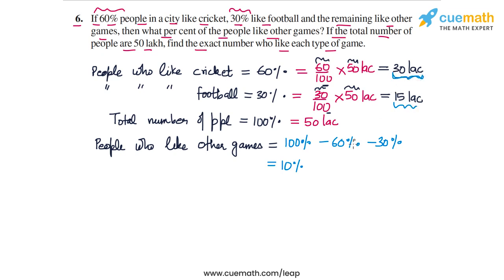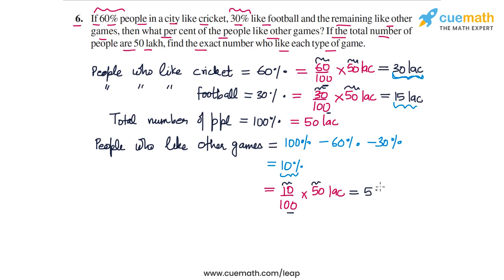15 lakh people like football. People who like other games, which is 10%, equals 10/100 of 50 lakh. 10 times 50 is 500, and 500 divided by 100 is 5. So this equals 5 lakh people who like other games.